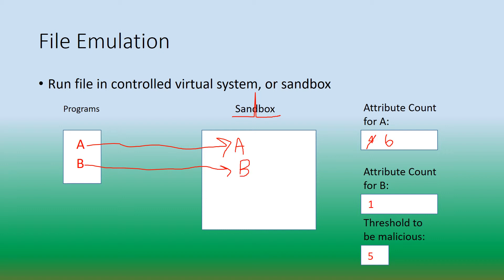For program B in the sandbox, we increment B's count from 1 to 2. After finishing all three types of heuristic analysis, it turns out that A has six attributes and B has two attributes. Since the threshold for a file to be malicious is at least five attributes, we consider program A to be malicious, whereas program B is not malicious.